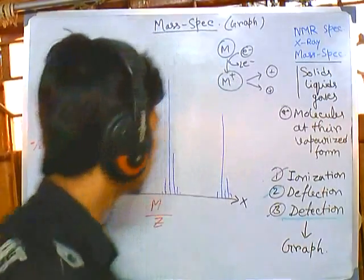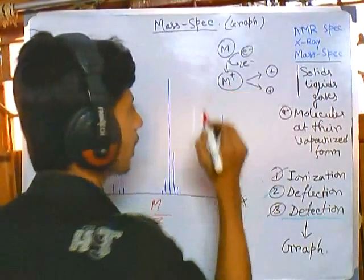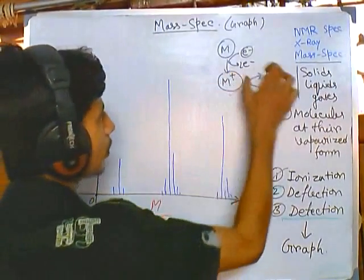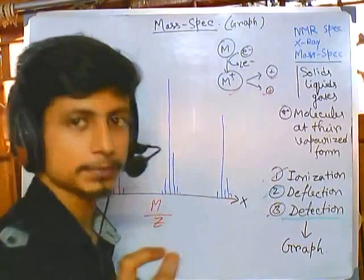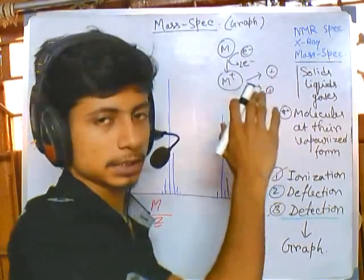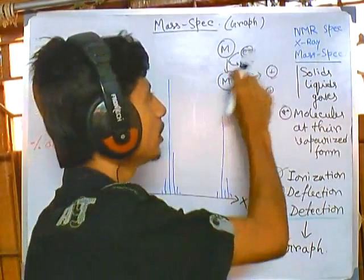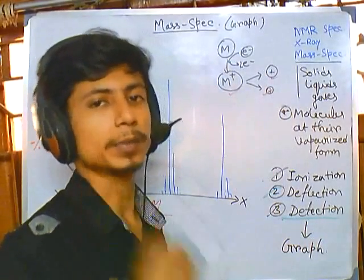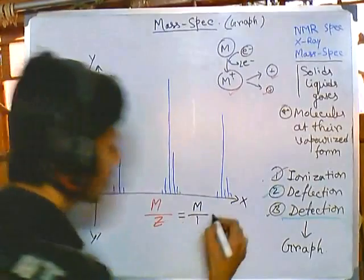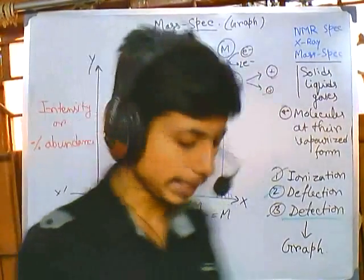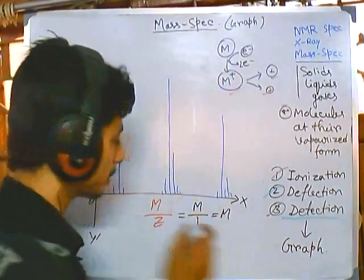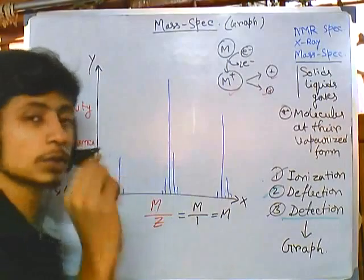This is a very important concept: we are getting the plots not only from the fragment ions but also from the molecular ions. For the molecular ions and fragment ions, they each have a particular mass and a particular charge. In all cases the charge is +1, because only one electron is released and the net charge is +1. So m divided by 1 means the x-axis ultimately gives us molecular weight.